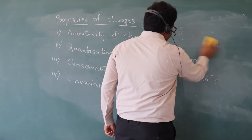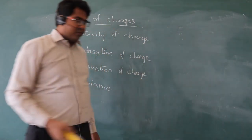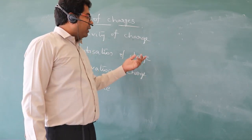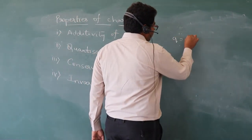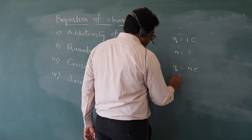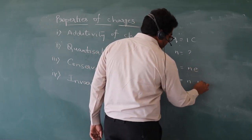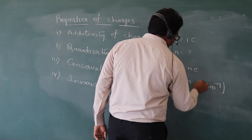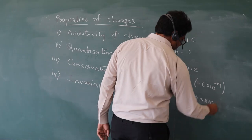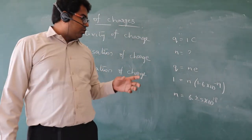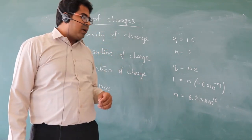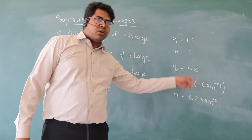Next property is conservation of charge. Before discussing it, let us find how many electronic charges need to be added or removed to give a body 1 coulomb of charge. This means Q = 1 coulomb, and we have to find n. By quantization of charge, Q = ne, so 1 = n × 1.6 × 10⁻¹⁹. Calculating n gives 6.25 × 10¹⁸.